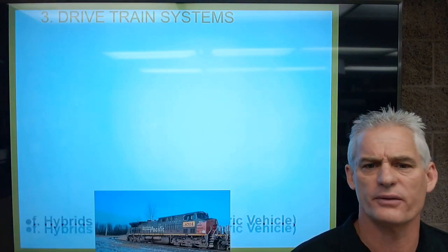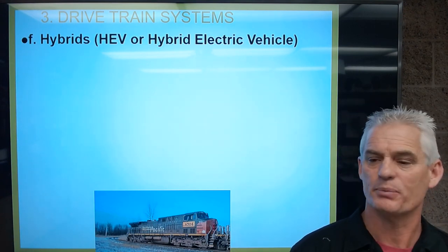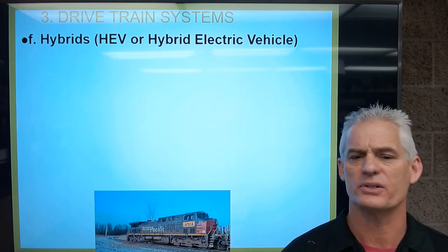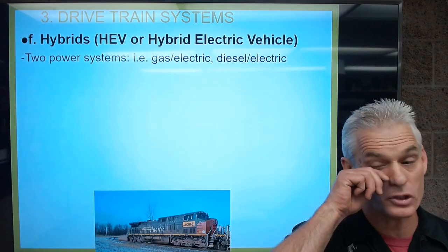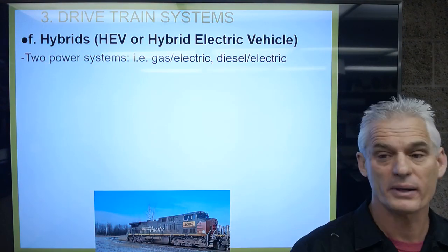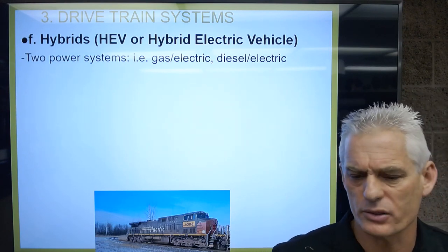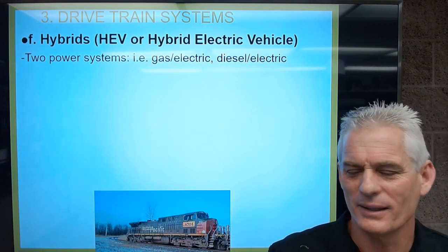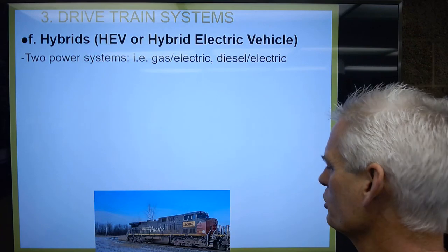Let's talk about different types of drive systems — let's look at hybrids. A hybrid, or HEV (hybrid electric vehicle), means we have two power sources: either gasoline and electric, or diesel and electric. I've put a diesel locomotive here because, while it's technically not a standard hybrid, it does have two power sources.